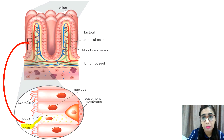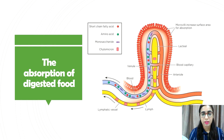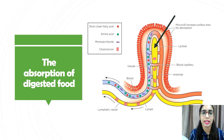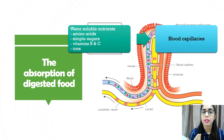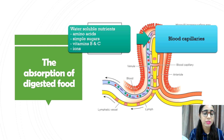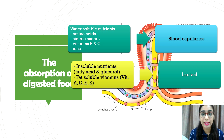The absorption of digested food occurs when digested food molecules in the lumen penetrate the villi epithelium and enter the blood capillary network and also the lymphatic vessel. Water-soluble nutrients such as amino acids, simple sugars like glucose, fructose, and galactose, vitamins B and C, and ions will be transported into the blood capillaries. Insoluble nutrients such as fatty acids, glycerol, and fat-soluble vitamins A, D, E, and K will be transported into the lacteal.